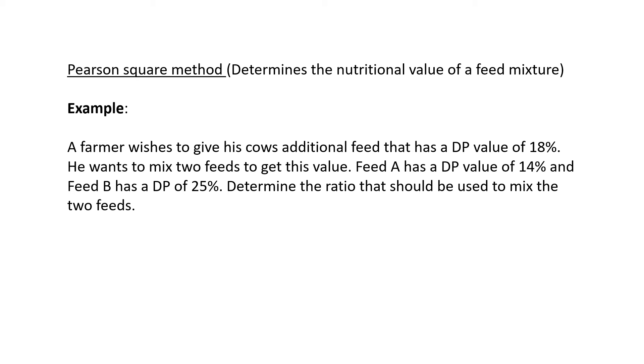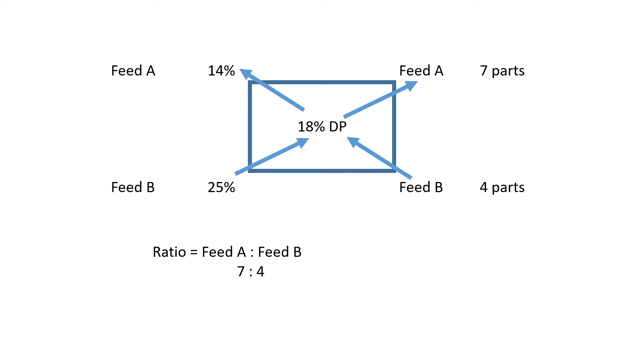First of all, you literally make a square—this is the square method. Remember the end of this entire process there must be 18% protein inside the feed.